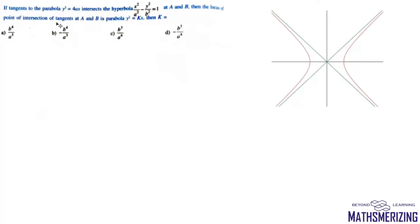The next question: if tangents to parabola y² = 4ax intersect the hyperbola at A and B, then the locus of the point of intersection of tangents at A and B is a parabola y² = kx. We need to find the value of k. We have parabola y² = 4ax, and suppose a tangent to this parabola intersects the hyperbola at two points A and B.